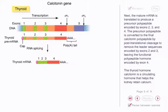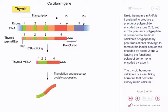Next, the mature mRNA is translated to produce a precursor polypeptide encoded by exons 2, 3, and 4. The precursor polypeptide is converted to the final calcitonin polypeptide by post-translational cleavage to remove the leader sequences encoded by exons 2 and 3, leaving the functional polypeptide hormone encoded by exon 4. The thyroid hormone calcitonin is a circulating hormone that helps the kidney retain calcium.